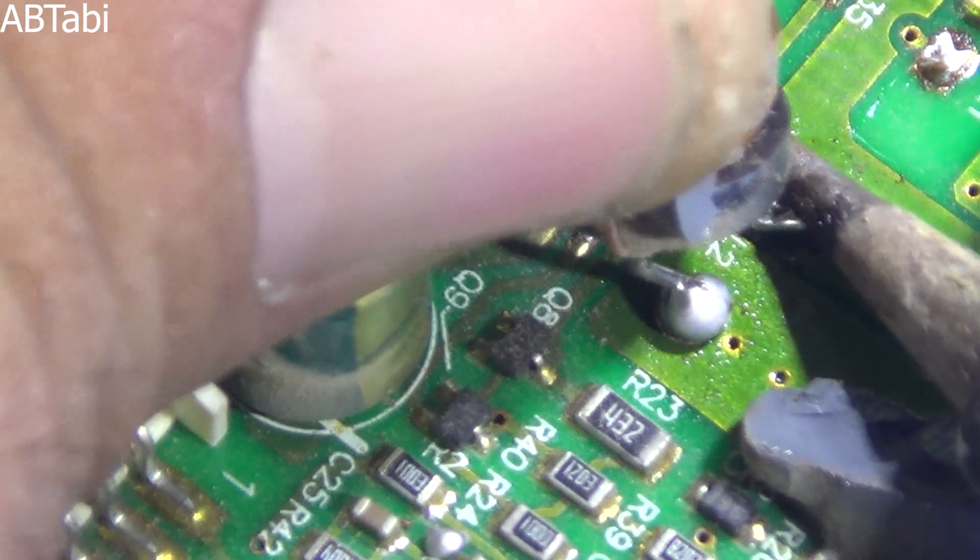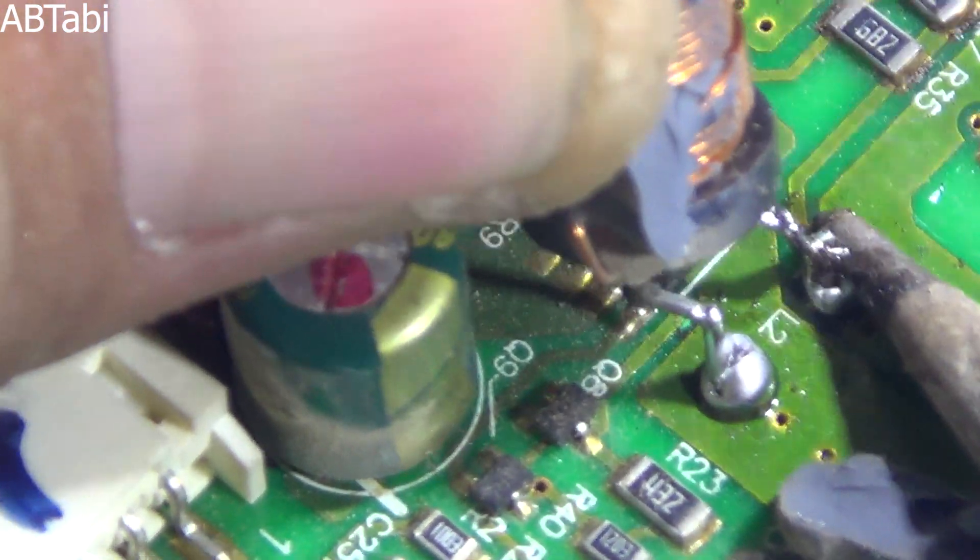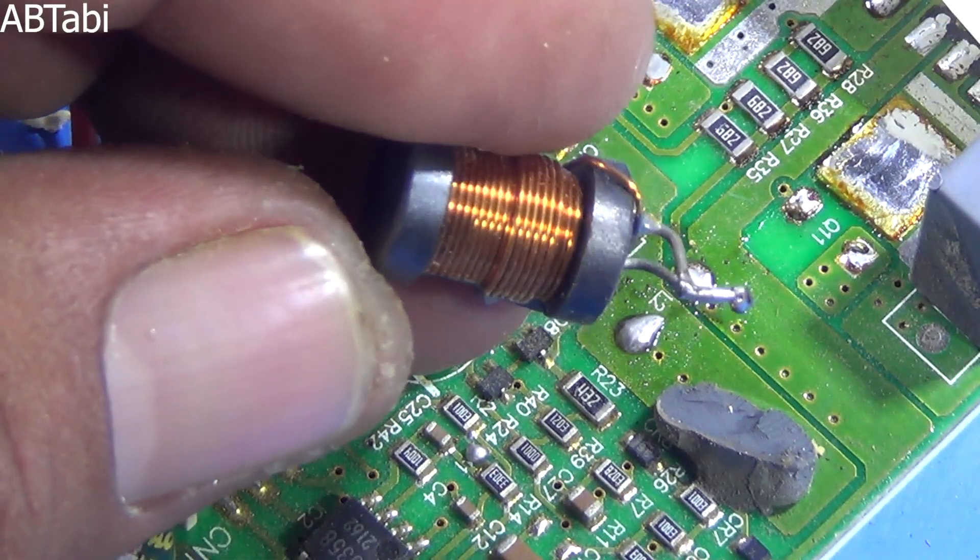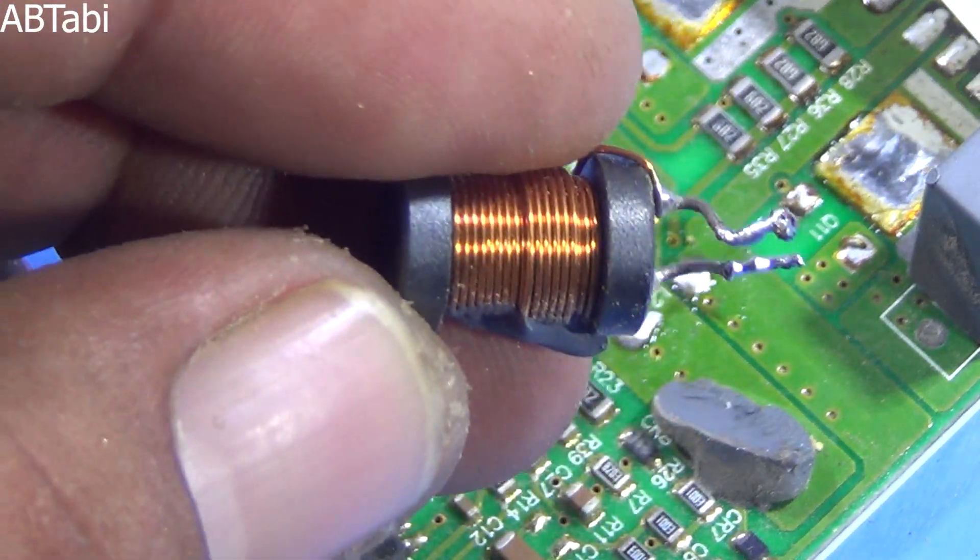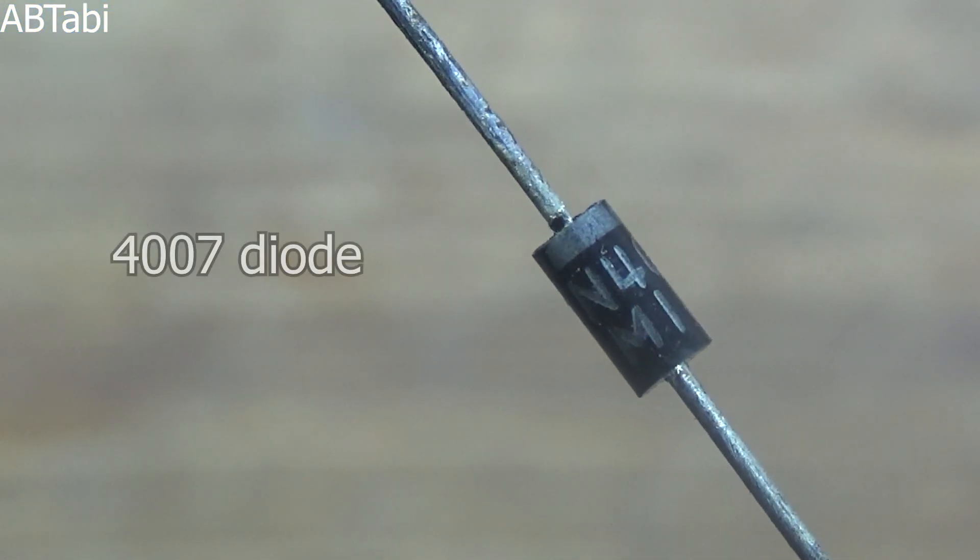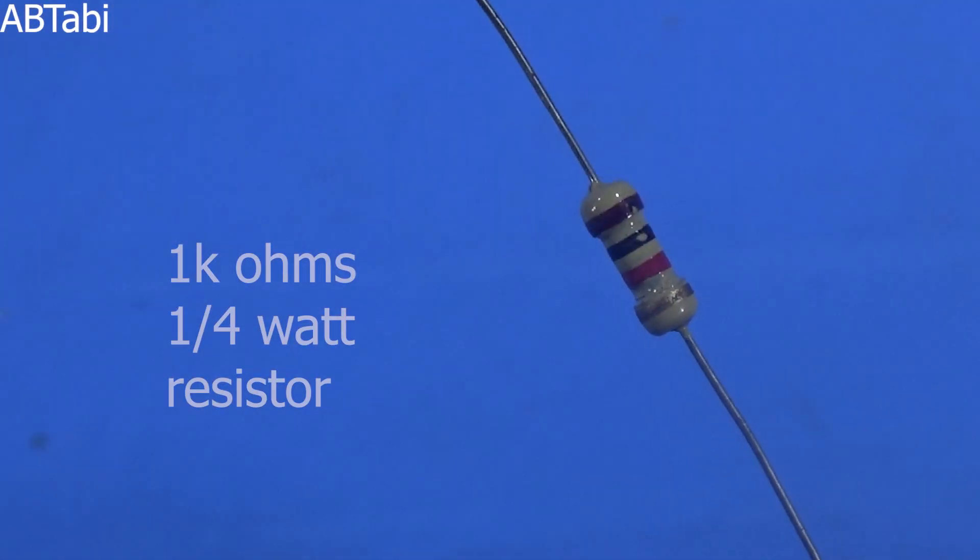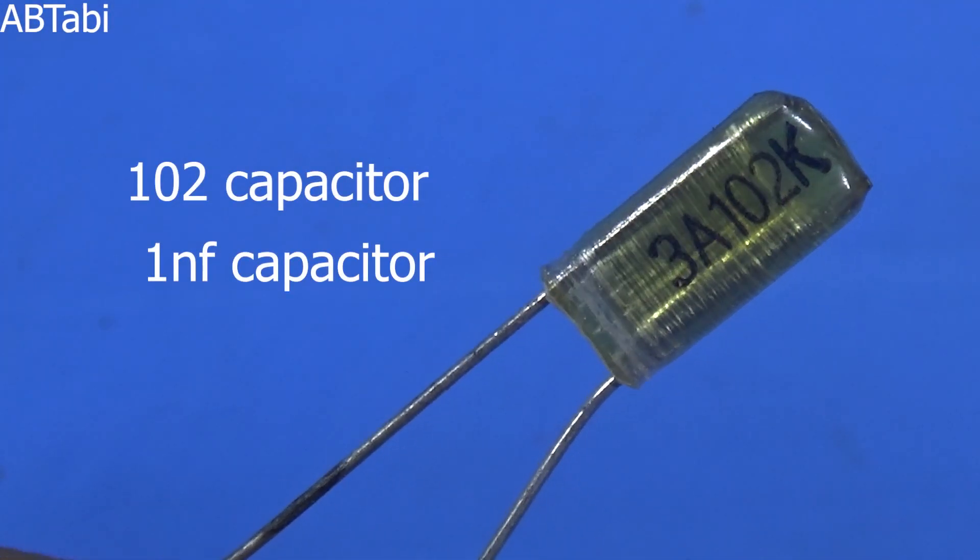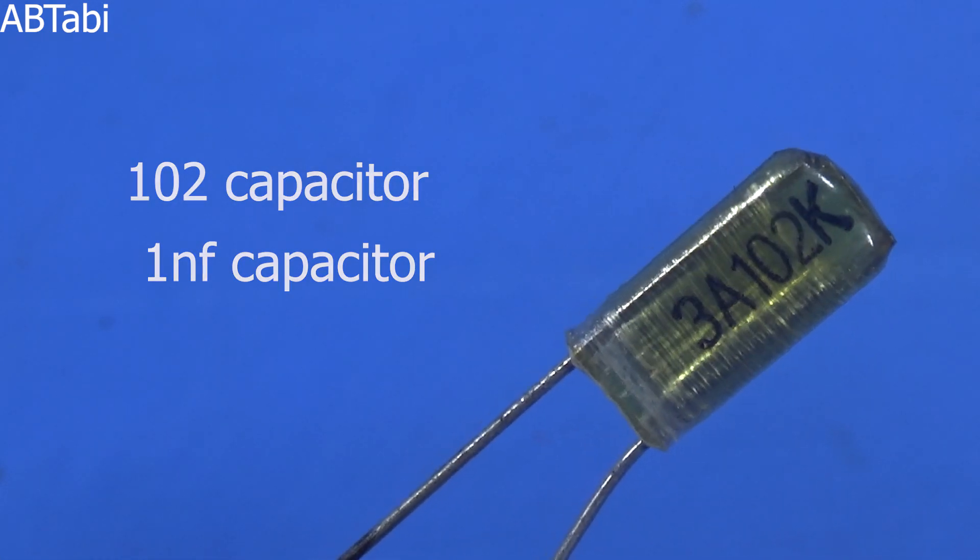We use other components with NE555 IC: 1 ohm quarter watt resistor, 4007 diode, 1k ohm quarter watt resistor, 102 capacitor which means 1nF capacitor.